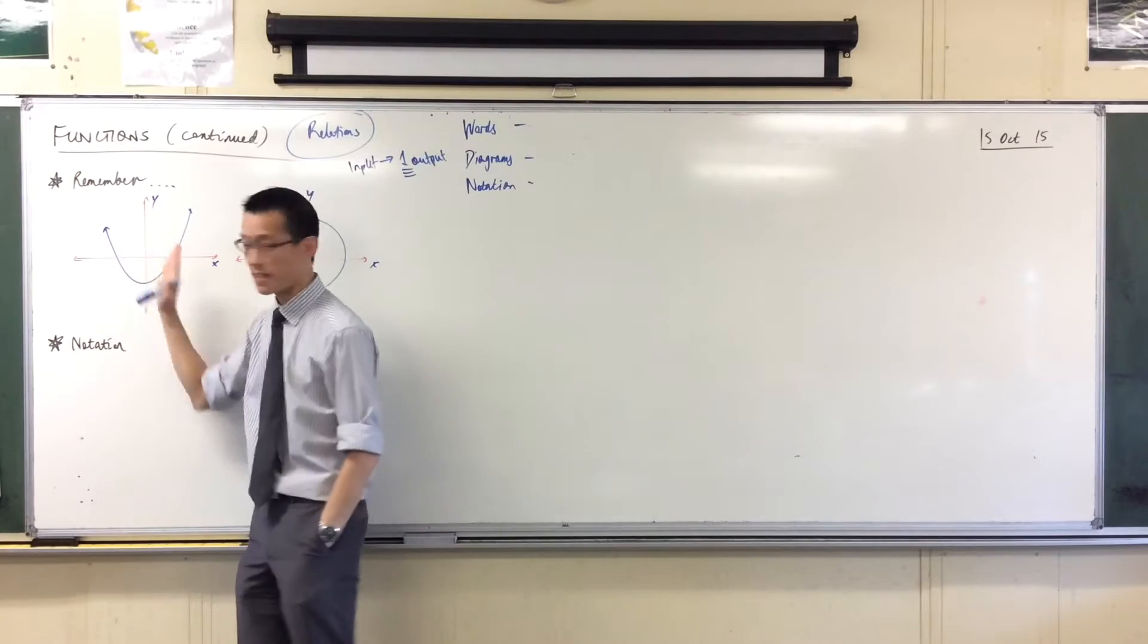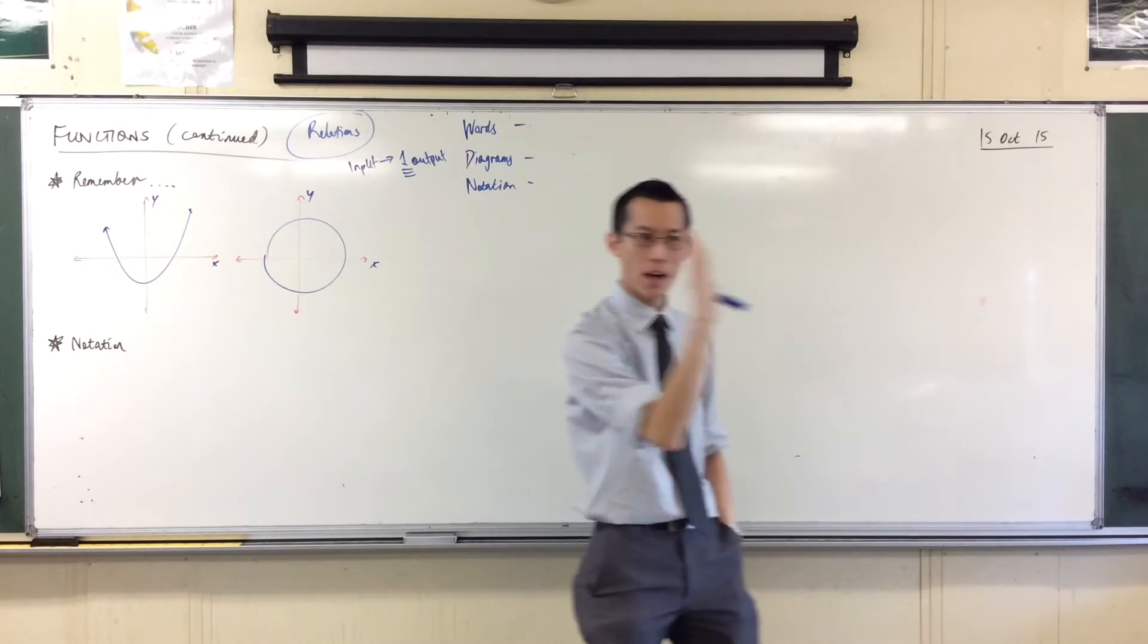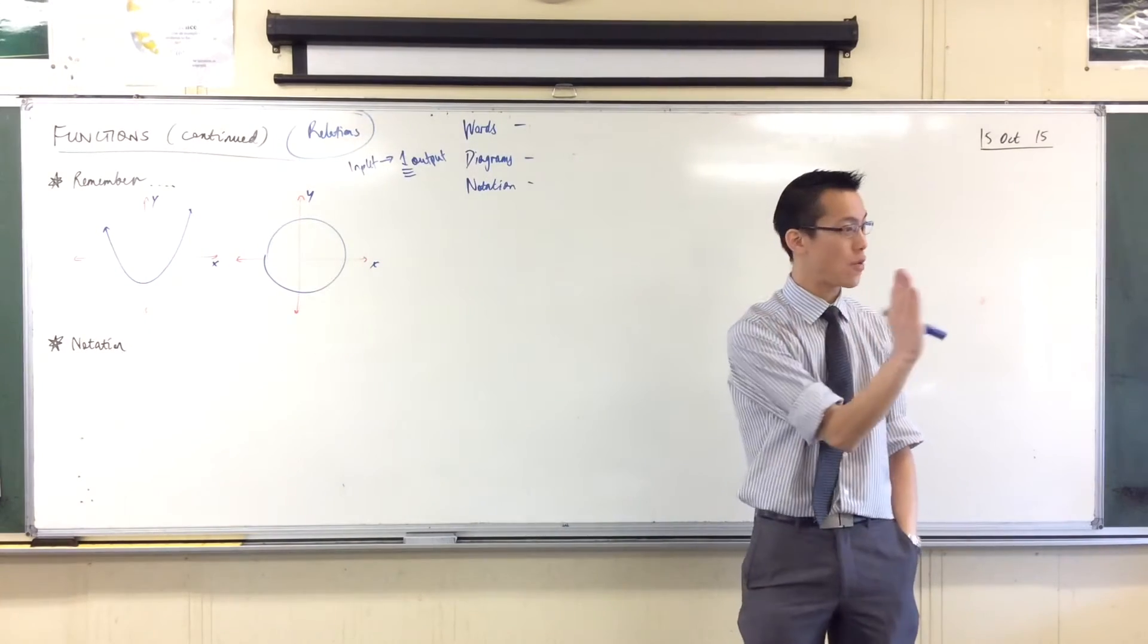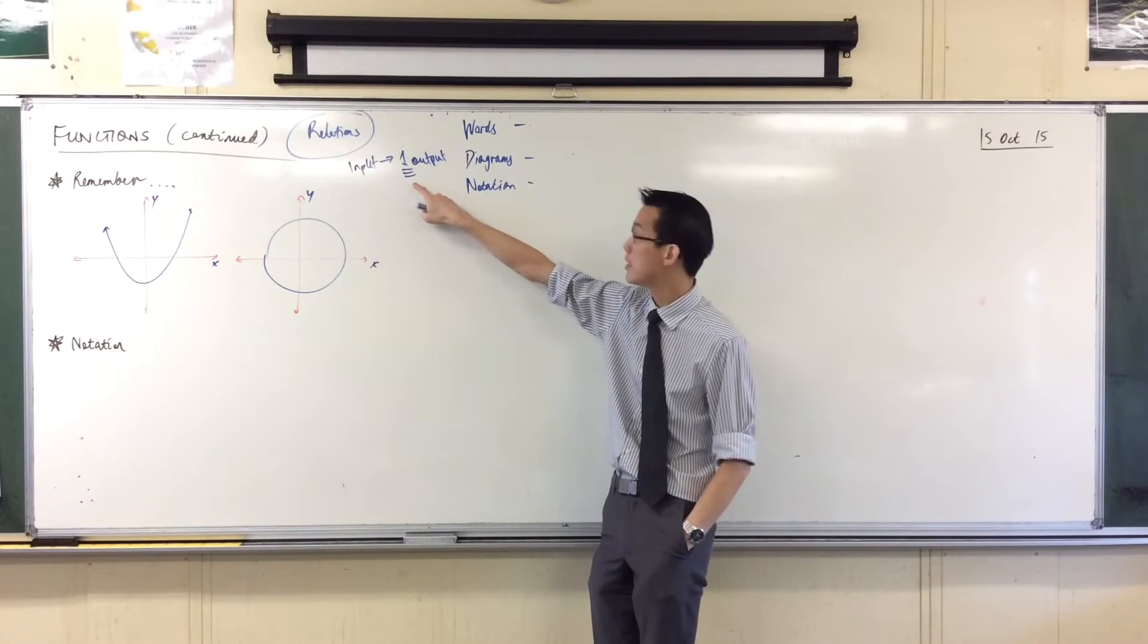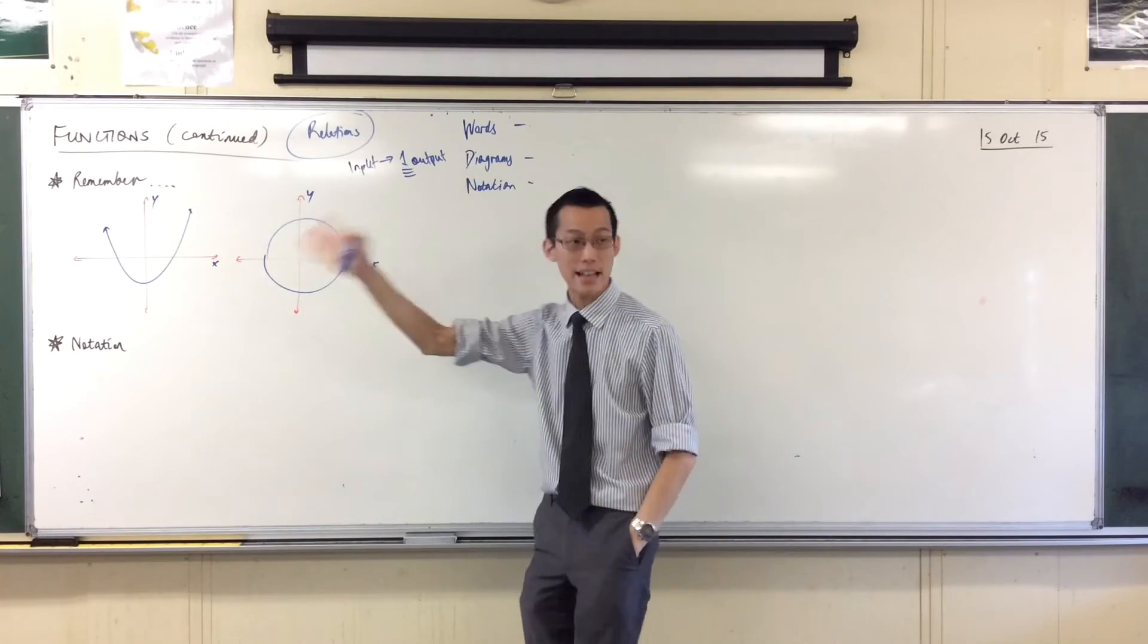And x equals 0 is an input, etc. Now, if my vertical line, if I can go anywhere and it only hits the graph once, that means it only ever has one output, and that's a function.